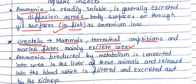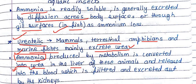Ammonia produced by metabolism is converted into urea. So first, ammonia is produced in our body through metabolism. This ammonia is then converted into urea in the liver. When metabolic activity occurs in the liver, ammonia is converted to urea, which is released into the blood, filtered by the kidneys, placed into the collecting ducts, and the filtered blood is sent back.